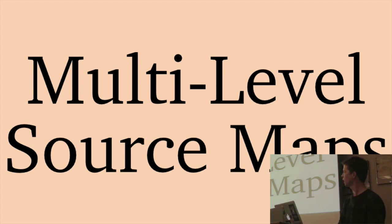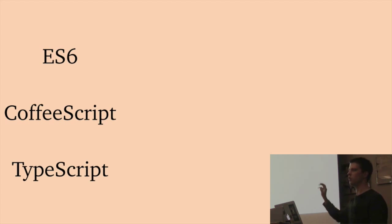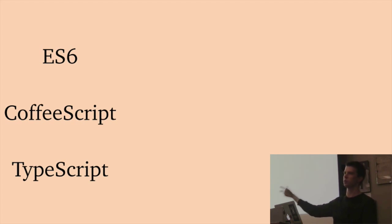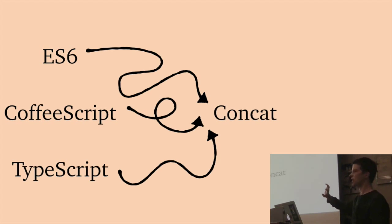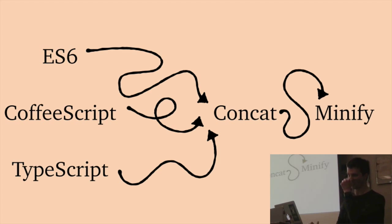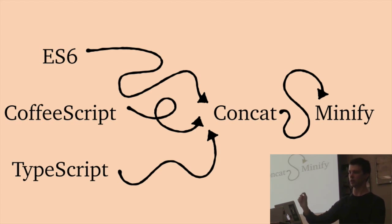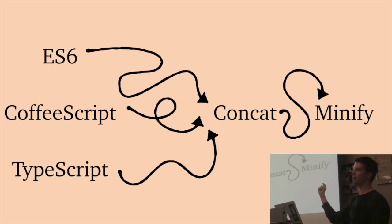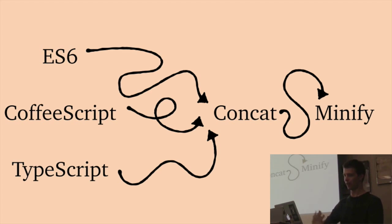The really cool part is what they call multi-level source maps. If you're writing your code in ECMAScript 6, CoffeeScript, or TypeScript, you can take each of those, compile them, concatenate them, and then minify — all in individual build phases — and source maps will remember its context. So even when you get to the minified version, it will still remember your original code was ES6, CoffeeScript, TypeScript, or whatever. That part just blows my mind.